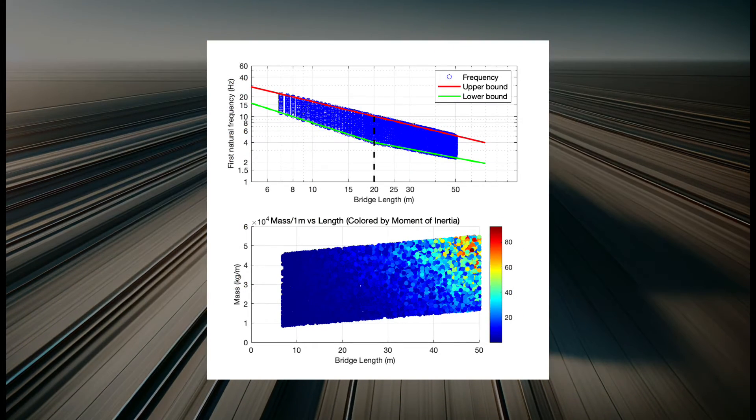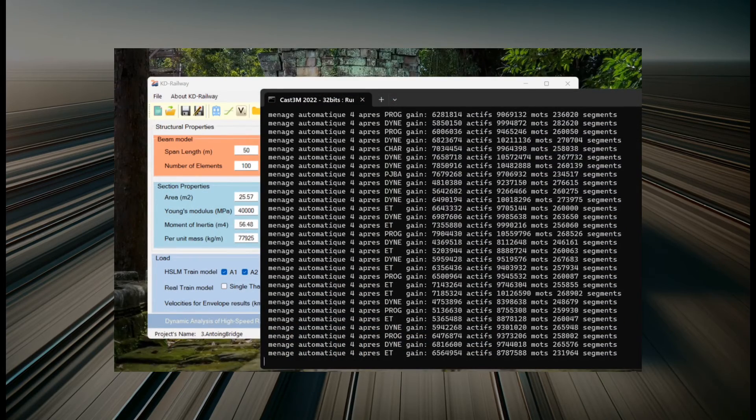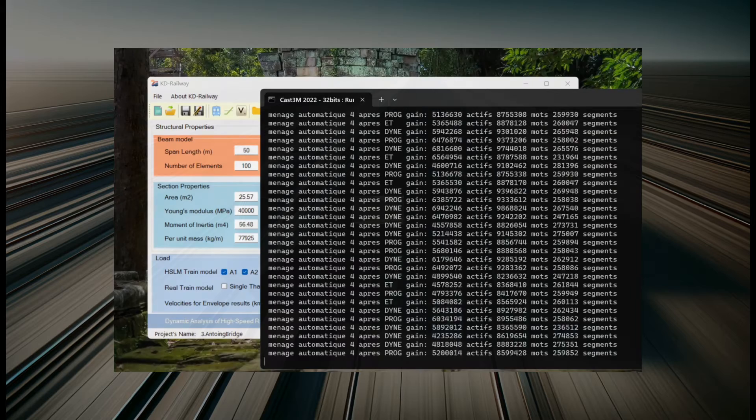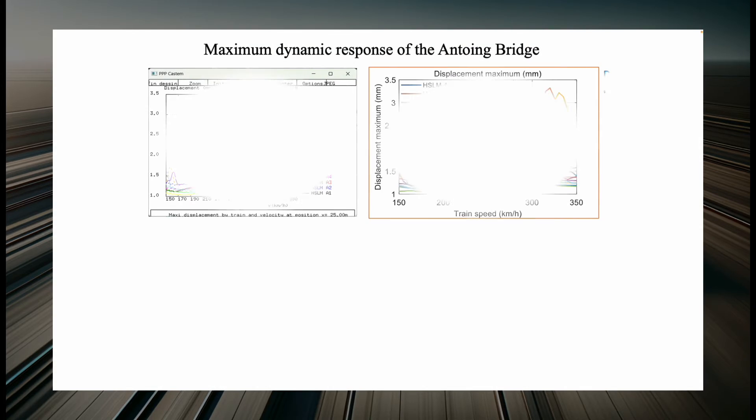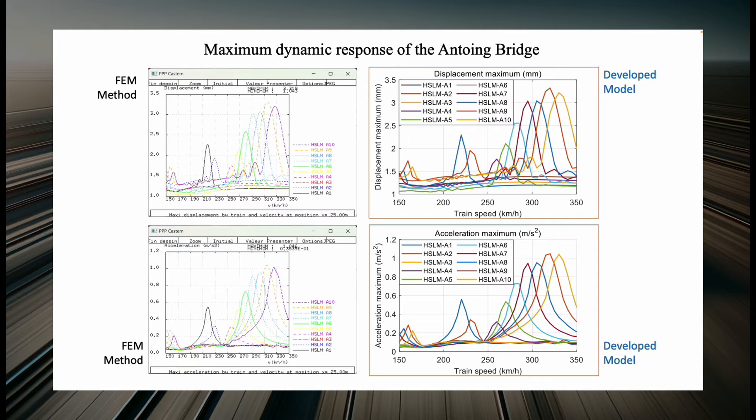In the end, we gathered over 6 million data points. We then developed the surrogate model using cutting-edge techniques like semantic search and numerical decoding. The model's precision was verified by comparing its results with those obtained from finite element method. The Antoing bridge featured in this video demonstrates the model's reliability, and importantly, this bridge's specifics were not used in the model's training, ensuring a true test of its predictive capabilities.